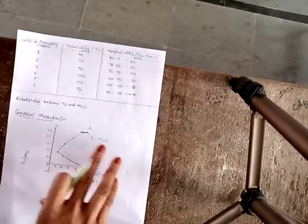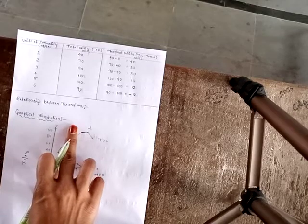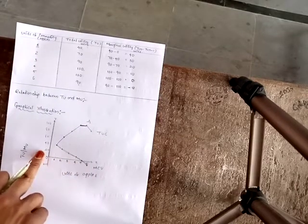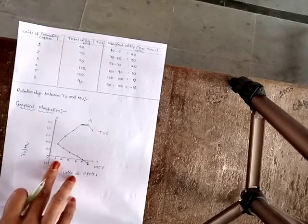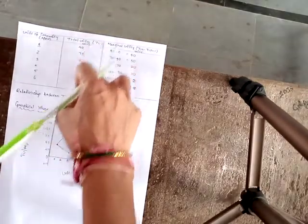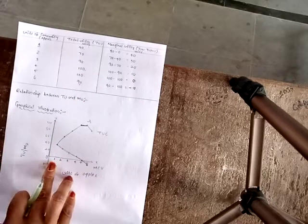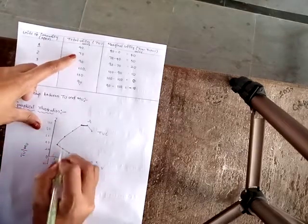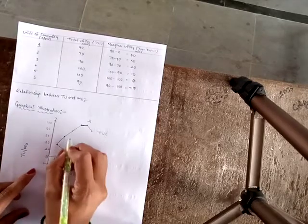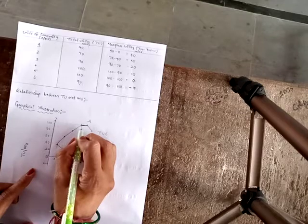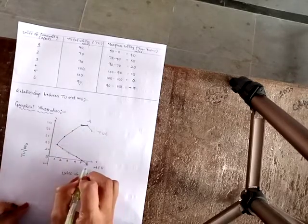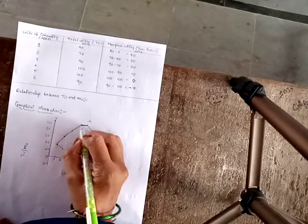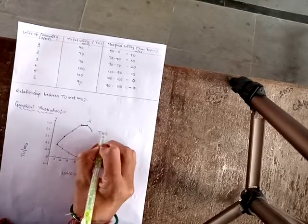This can be explained with the help of a diagram. In the diagram, the x-axis shows units of apples (1 to 6), and the y-axis shows total utility and marginal utility values. The total utility curve plots points at 40, 70, 90, 100, 100, and 90 for apples 1 through 6 respectively, forming the total utility curve.